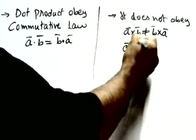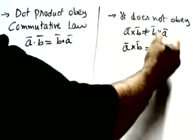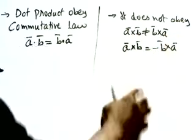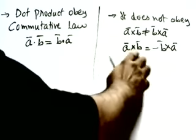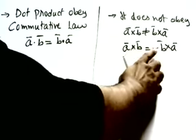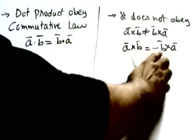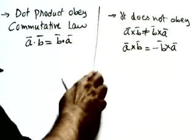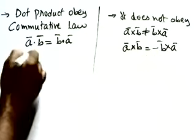For cross product, a×b = −(b×a). That means if we change the order in cross product, the sign becomes negative — the sign changes.